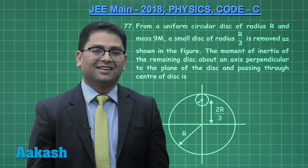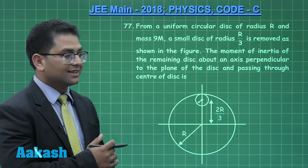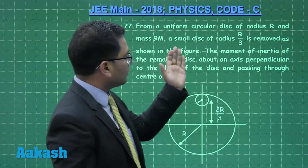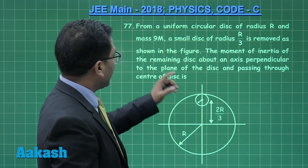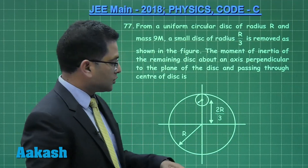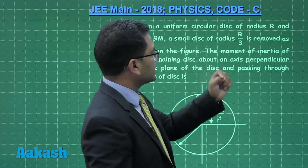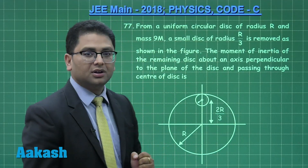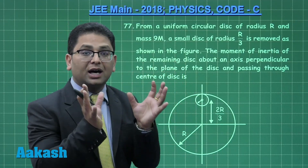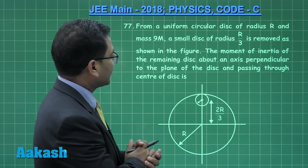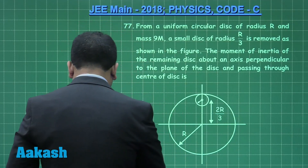Question 77 is from rotation. From a uniform circular disc of radius R and mass 9m, a small disc of radius R/3 is removed as shown. The complete disc without the cavity has mass 9m.